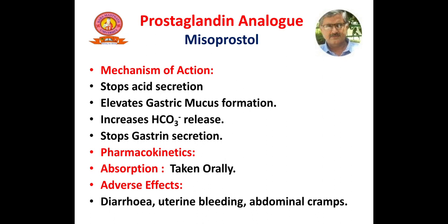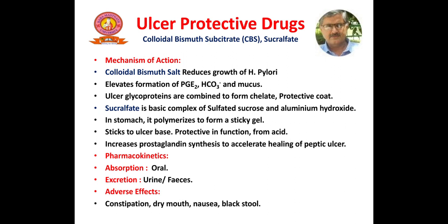The next category is prostaglandin analog — misoprostol. Misoprostol has both ulcer healing and ulcer protective functions. It helps stop acid secretion and promotes mucus formation. It also elevates bicarbonate release and inhibits gastrin secretion, thereby effectively helping in ulcer healing. Given orally, adverse effects include diarrhea, uterine bleeding, and abdominal cramps.